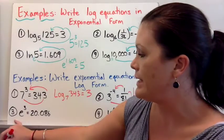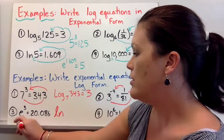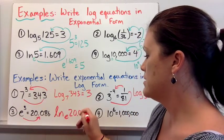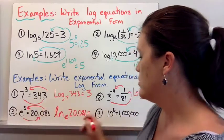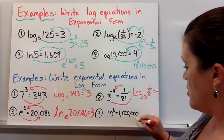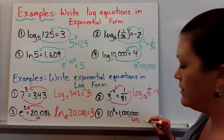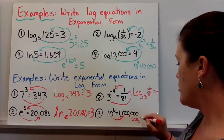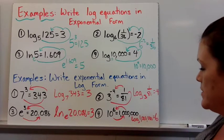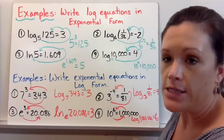For number 3 we have an E, so we'll rewrite it with natural log. Natural log base E of 20.086 equals 3. And for number 4 we have a 10. So we write log base 10 of 1,000,000 equals 6. This is just practice on rewriting from one form to the other, because sometimes when we're solving we need to do this. We've got to cover some basics before we solve equations with logs.